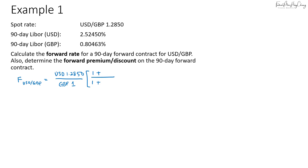For example, in the numerator we have US dollar, therefore the interest rate used will be the US dollar LIBOR, which is 0.025245. For the denominator we have pound, so we use the LIBOR for pound, which is 0.0080463. Don't forget to multiply by the number of days, which is 90 over 360 for LIBOR — the same applies for the denominator.